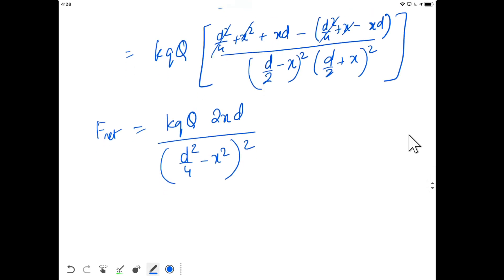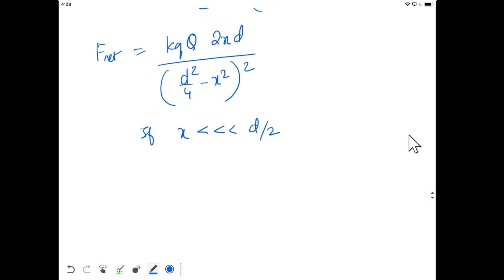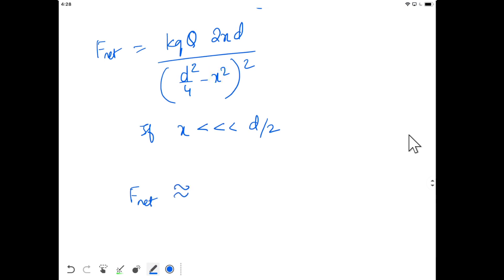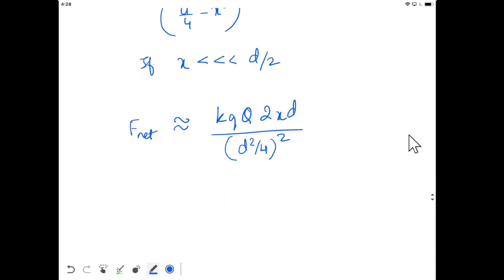Now if x is much smaller than d/2, then in front of d²/4 we can ignore x². F_net will be approximately kQq times 2xd divided by (d²/4)². F_net equals 32kQqx/d³. This is the net force acting on the charged particle.